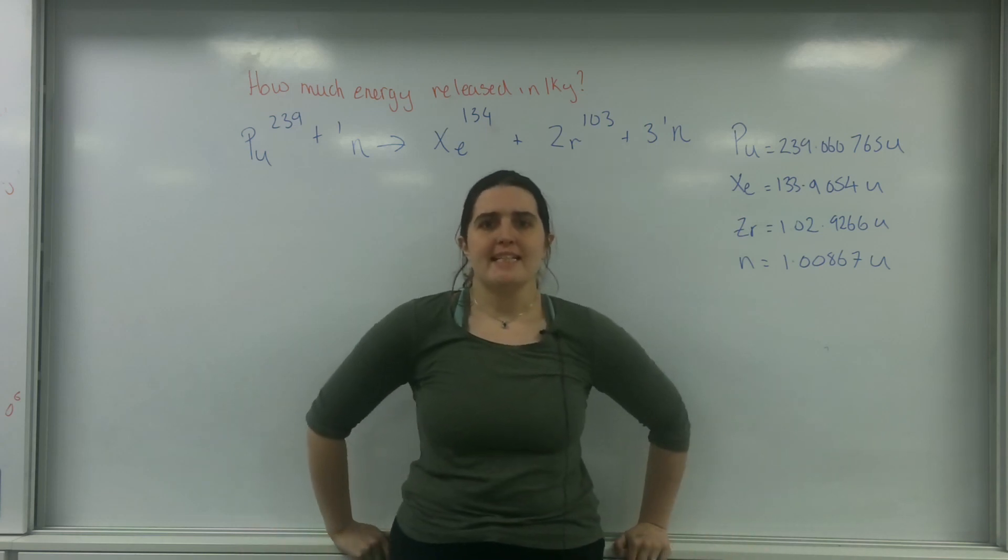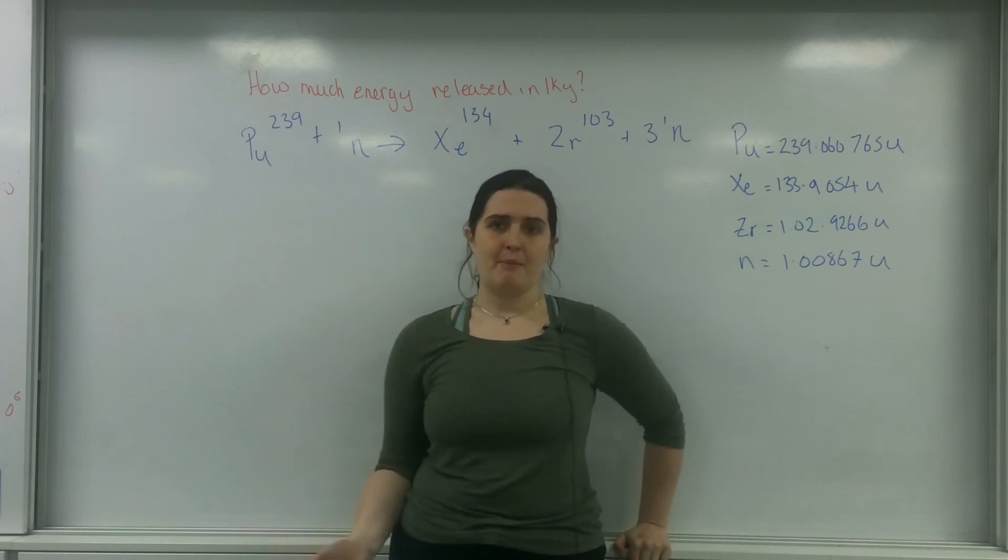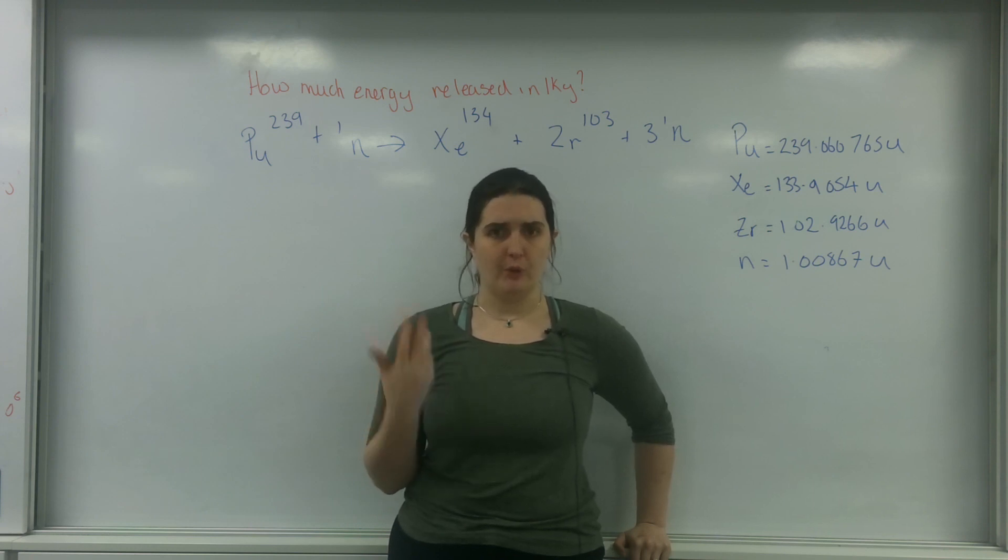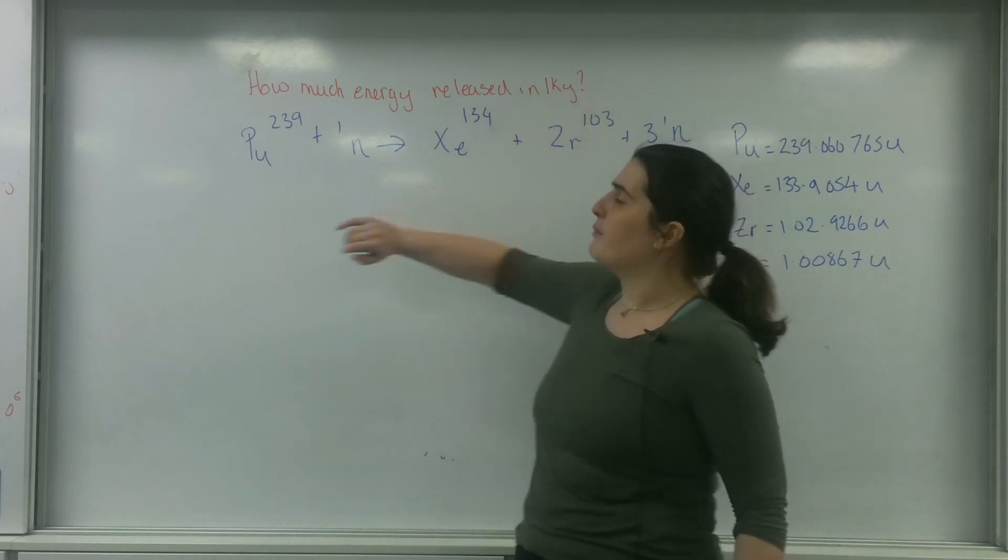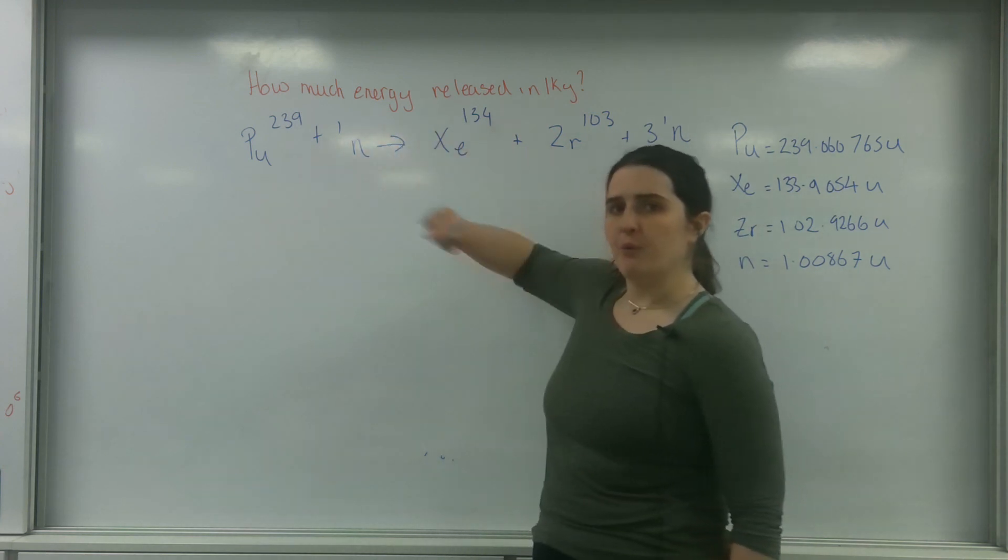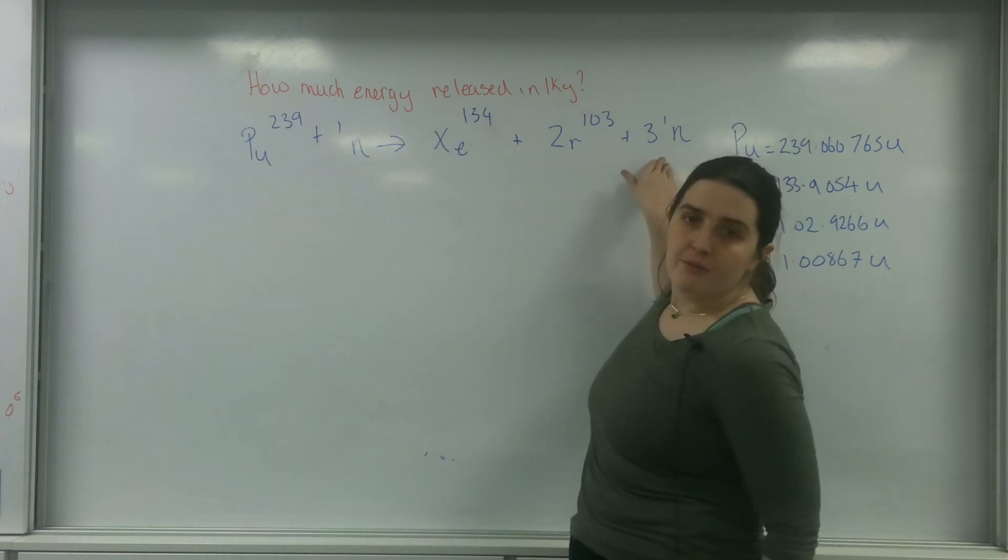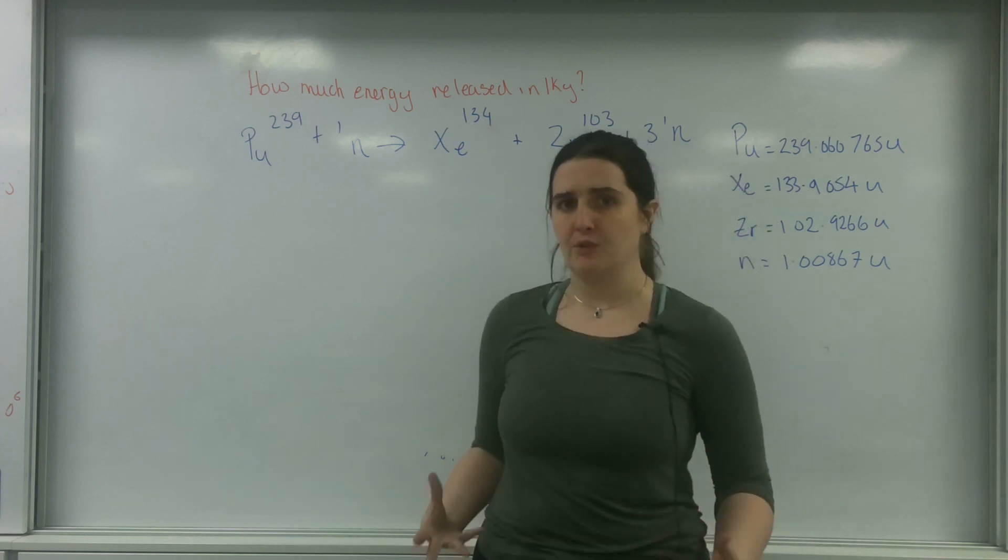Good evening and welcome to CL Physics. Today I'm going to do a synoptic example of a nuclear question. What I'm asking here is how much energy is released in one kilogram of polonium that has been flung with one neutron and decayed to xenon and zirconium and three neutrons.